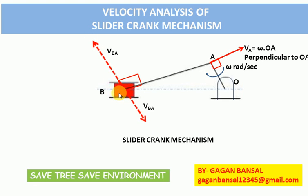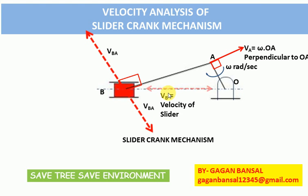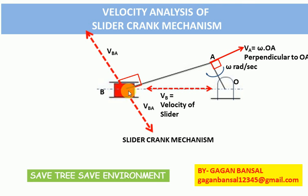The velocity of the slider, that is velocity of B with respect to O, is along the line of action of OB. So we know the velocity of point A with magnitude and direction, we only know the direction of velocity of B with respect to A, and we know the direction of velocity of B with respect to O.